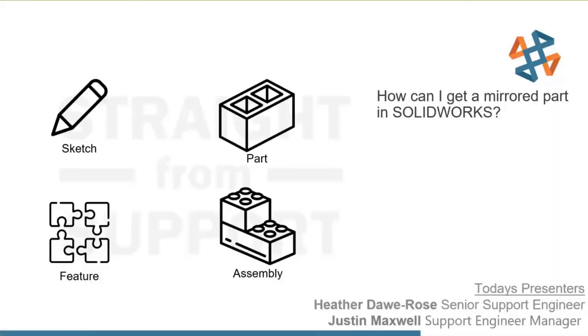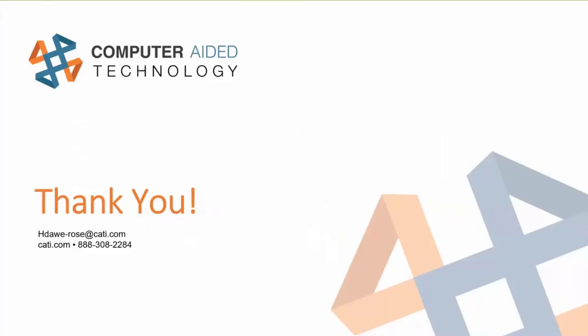To recap: we covered how to get mirrored geometry in a sketch using Dynamic Mirror, mirroring a feature, mirroring a part to get a left-hand/right-hand version, mirroring components in an assembly, and the bonus drawing mirror view method. There are many ways to create mirror geometry in SolidWorks. I hope you check out some of those settings and enjoyed this segment. If you have support questions, contact us - we're CATI customers' support team. Hope to see you next month for Straight from Support!